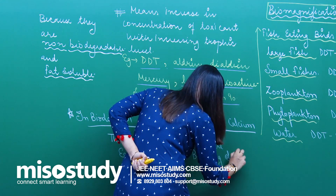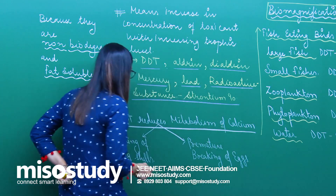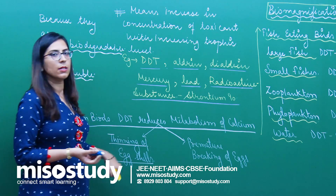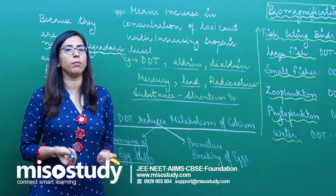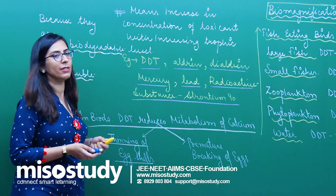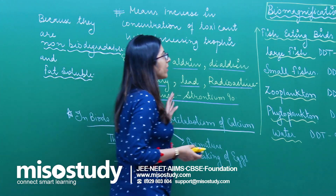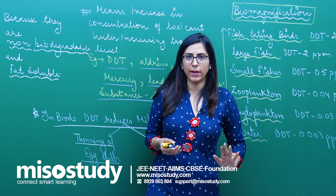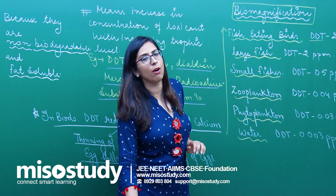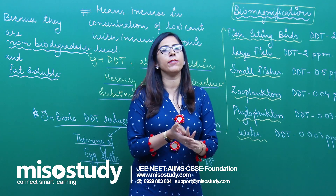The second consequence is that it leads to premature breaking of eggs. If there is premature breaking of eggs or thinning of eggshells, the population of these birds will be greatly reduced. This is the overall effect of biomagnification, or the effects of water pollution.